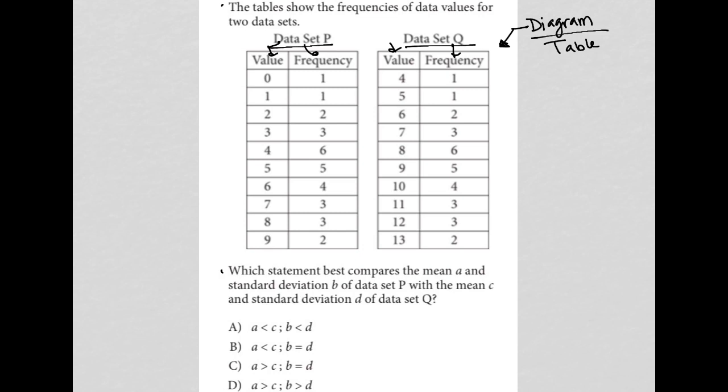The next part of the question here says which statement best compares the mean A and standard deviation B of data set P. Okay, so A is the mean over here and B is the standard deviation for set P with the mean C and standard deviation of D. Okay, so C is the mean for this data set and D is the standard deviation for this data set of data set Q.